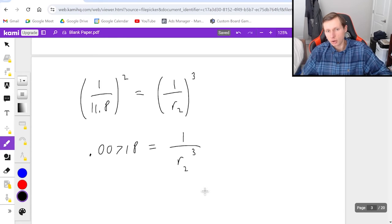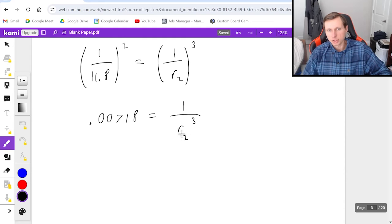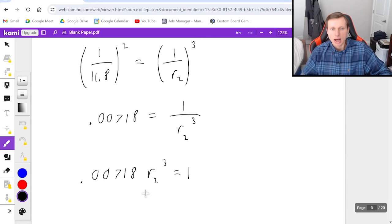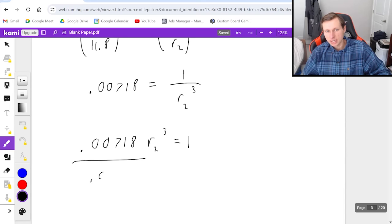Now if I want to solve for r2, it means I'm going to multiply both sides by r2 cubed. In other words, 0.00718 r2 cubed is equal to 1. I then divide both sides by 0.00718.